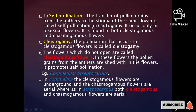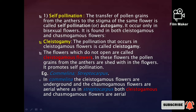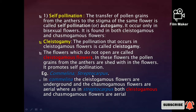In these flowers, the pollen grains from the anthers are shed within the flowers. Because the flower is closed, it is only self-pollination. For example, Commelina, Streptocarpus, and similar plants are called cleistogamous flowers.